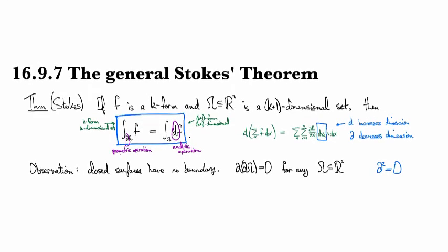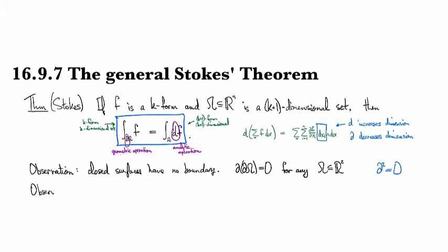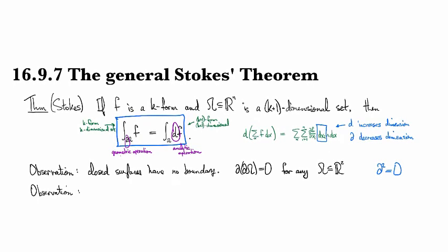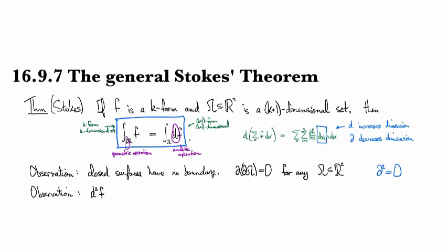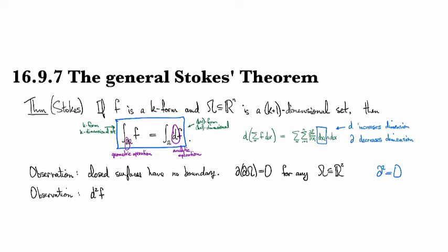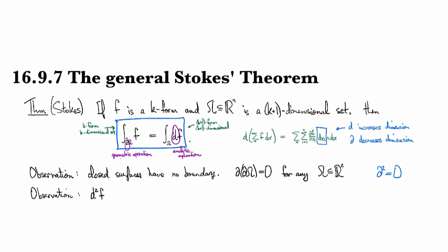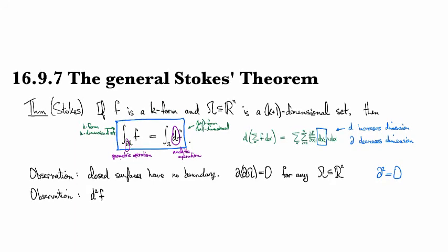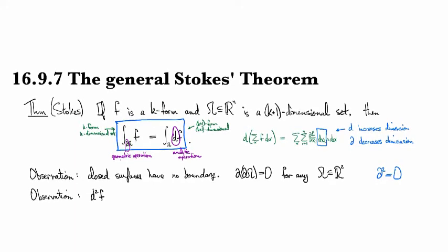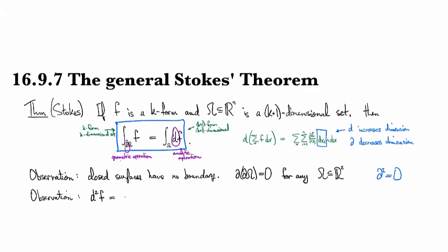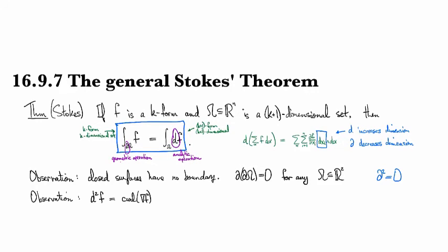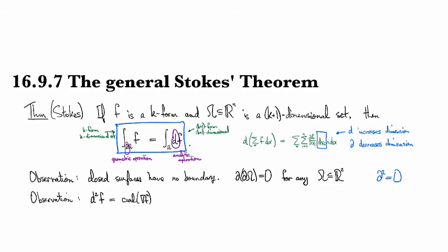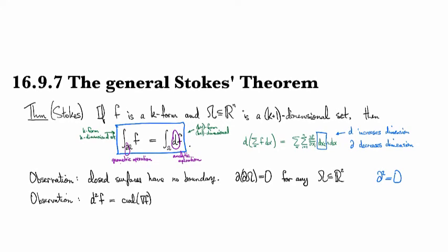Now consider applying the differential operator twice. If F is just a regular scalar function, then D looks like gradient and then curl. So we apply D once and get a gradient, apply it again and get a curl — and there's a theorem that the curl of the gradient is equal to zero.